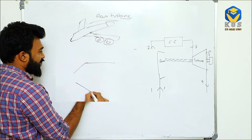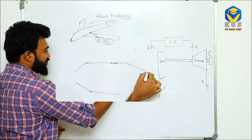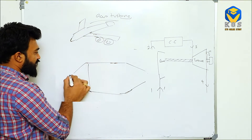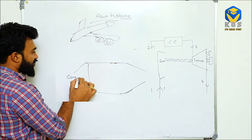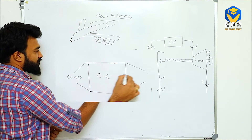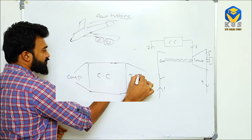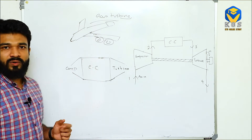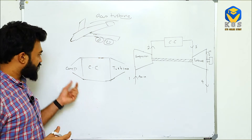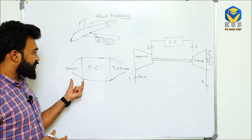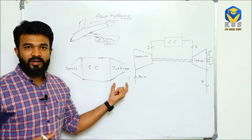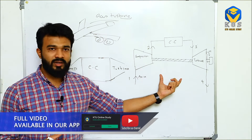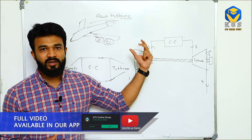Here is a sectional view of the gas turbine engine. The first portion is called the compressor, then comes the combustion chamber, and then comes the turbine. So a gas turbine engine consists of: first a compressor, then a combustion chamber, and then a turbine.